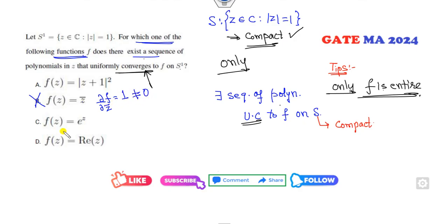Real part of z—that is x—which is not an entire function. Because if you compare them, U_x is 1, V_y is 0, which are not the same, so this is canceled also.